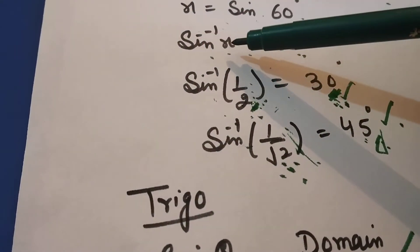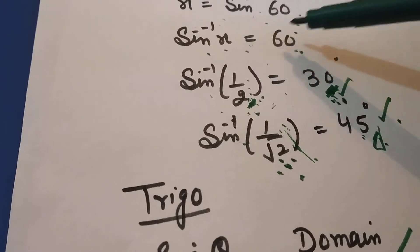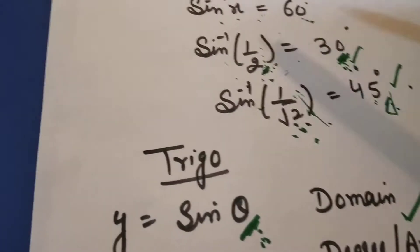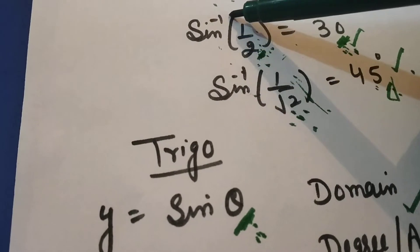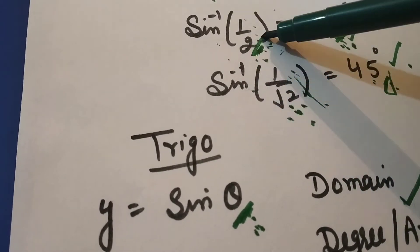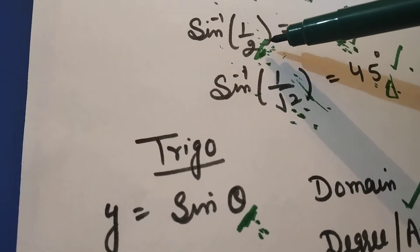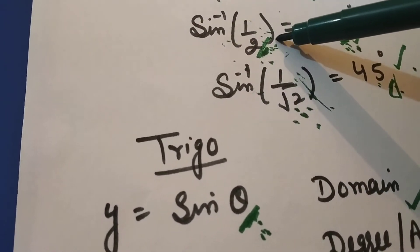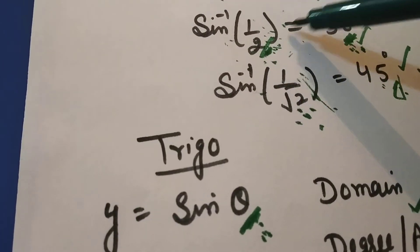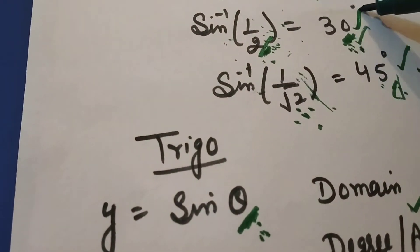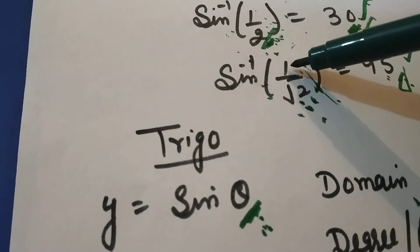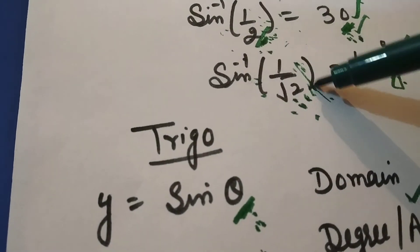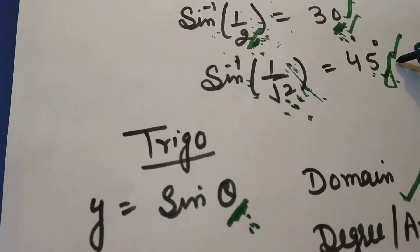Now, if I take x is equal to sine 60 degrees, and I transfer sine to the other side, then sine inverse x is equal to 60 degrees. So if I have a question: what is sine inverse of 1/2? This means the sine value is 1/2, so the angle is 30 degrees. Sine inverse of 1/√2 means the sine value is 1/√2, which corresponds to 45 degrees.